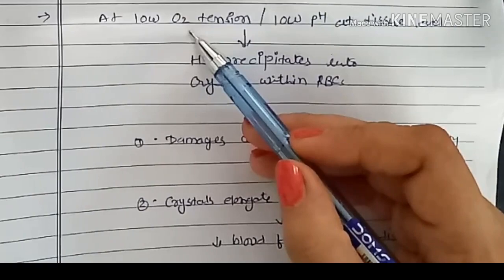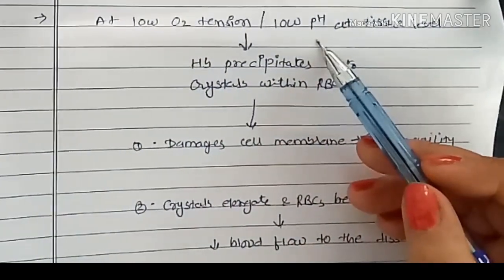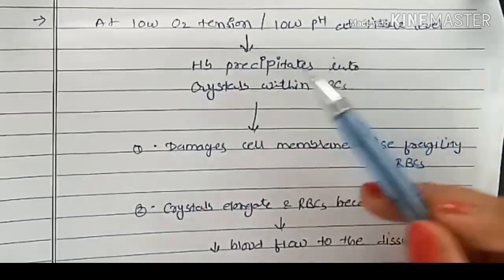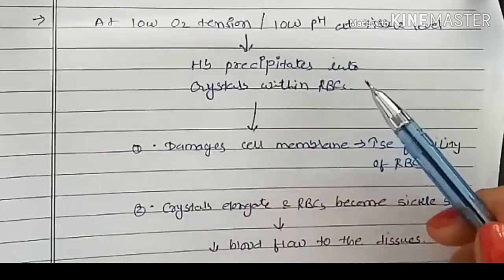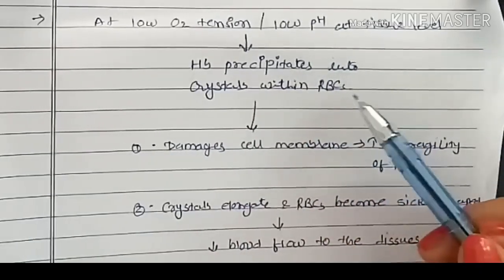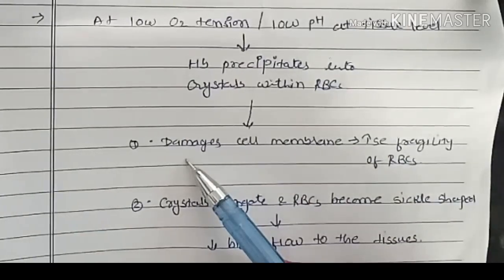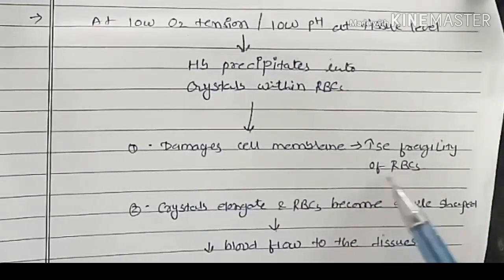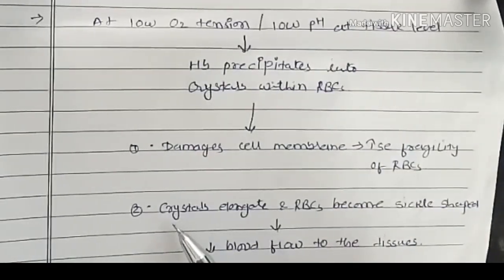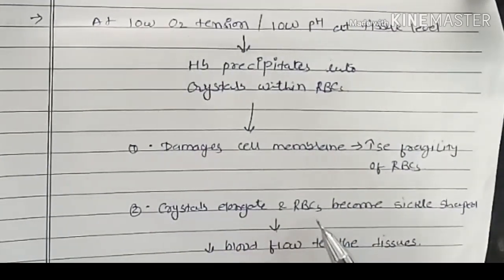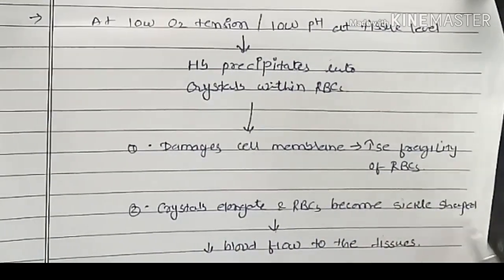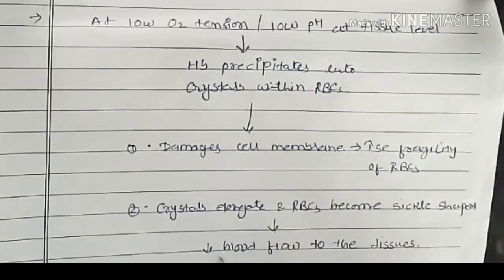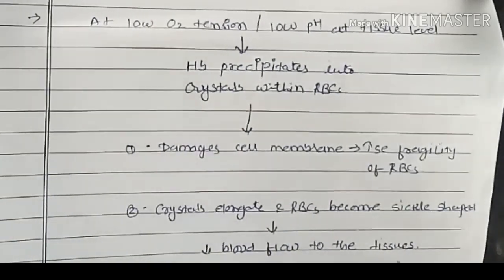In sickle cell anemia, at low oxygen tension or low pH at tissue level, hemoglobin precipitates into crystals within RBCs. This causes damage of the cell membrane, which increases fragility of RBCs and crystal elongates. RBCs become sickle-shaped, which decreases blood flow to the tissues.